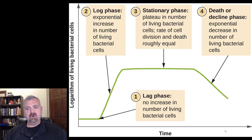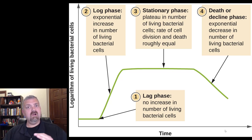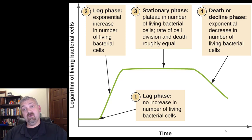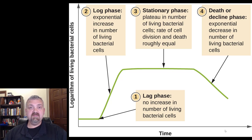So that is your bacterial growth curve: lag phase, log phase, stationary phase where births equal deaths, and the death or decline phase where we see a logarithmic decrease in population.